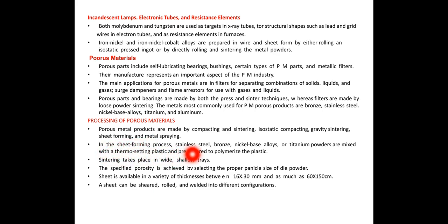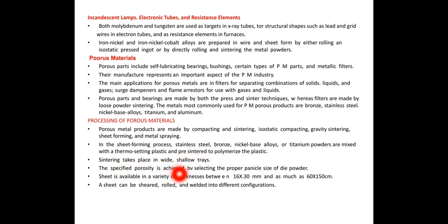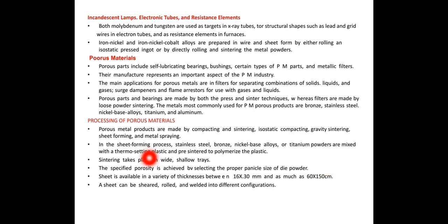In the sheet forming process, stainless steel, bronze, nickel base alloys, or titanium powders are mixed with a thermosetting plastic and pre-sintered to polymerize the plastic. Sintering takes place in wide shallow trays. The sheet is available with a thickness between 16 and 30 mm and as much as 60 by 150 centimeters. The sheets can be sheared, rolled, and welded into different configurations.